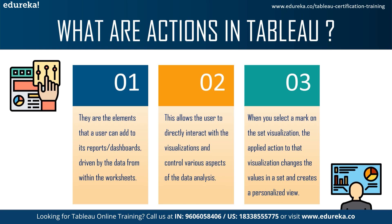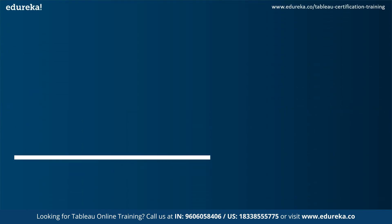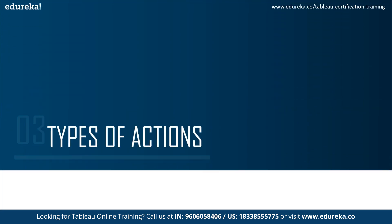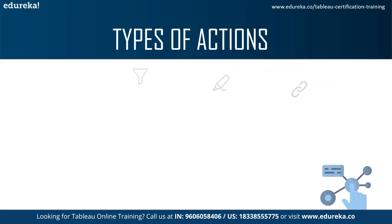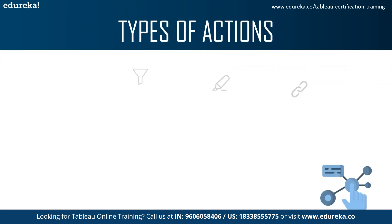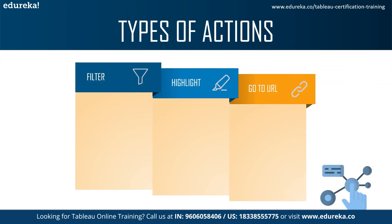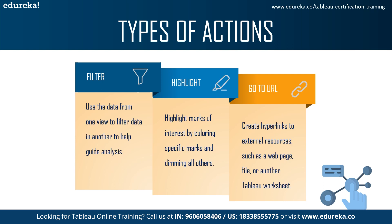There are different types of actions in Tableau, but mainly we use the first three: Filter, Highlight, and Go to URL. With Filter, we use data from one view to filter data in another view or dashboard to guide the analysis.